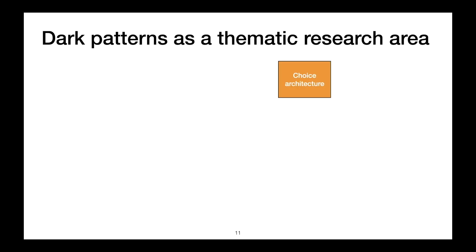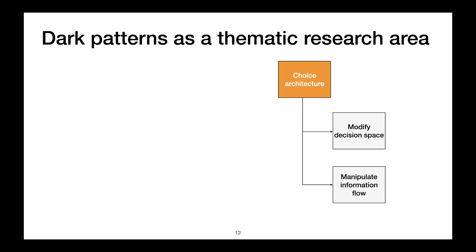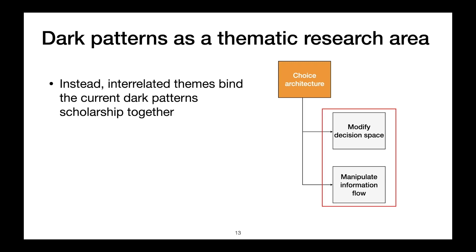Having reviewed this literature, we argue that at their core, dark patterns are choice architectural modifications. They either modify the decision space, or they manipulate the information that is available to users. But more importantly, both of these represent themes, not a single definition.